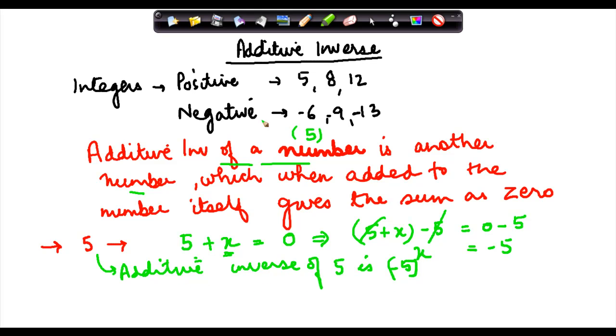Similarly, for 8, the Additive Inverse will be minus 8. If we add minus 8 to 8, we get zero. If we add minus 12 to 12, we get zero. So these numbers are the Additive Inverses of those numbers.